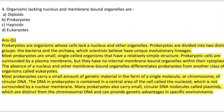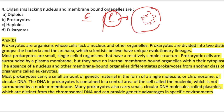Next question: Organisms lacking a nucleus and membrane-bound organelles — the options are: diploids, prokaryotes, haploids, or eukaryotes. In lower classes we studied the eukaryotes and prokaryotes division. Prokaryotes are not much evolved; the nucleus has no membrane boundary. The answer is prokaryotes.